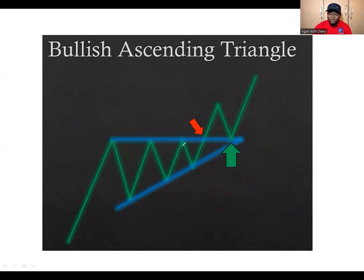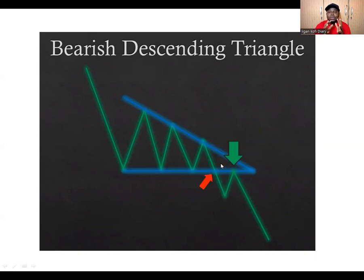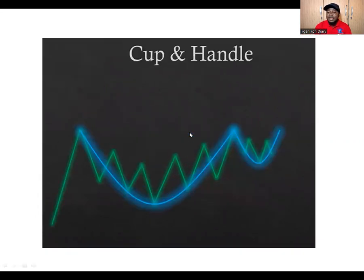We also have the descending triangle for the bearish side. The difference between it and the falling wedge is the same: in a descending triangle the lower lows are on equal level, while in a falling wedge the lower lows are not equal. A breakout of that equal lower level and a retest gives you your entry. That is the difference between the rising and falling wedge versus the ascending and descending triangle.